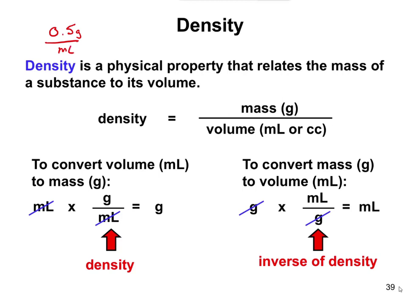And let's say that I had, let's do a problem where we convert mass to volume. So let's say we have 10 grams of something, 10 grams of a chemical that has a density of 0.5 grams per milliliter, and we want to know how many milliliters we have. We want to know the volume. So we start with 10 grams.